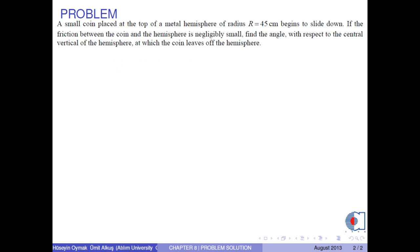A small coin placed at the top of a metal hemisphere of radius 45 cm begins to slide down. If the friction between the coin and the hemisphere is negligibly small, find the angle with respect to the central vertical of the hemisphere at which the coin leaves off the hemisphere.